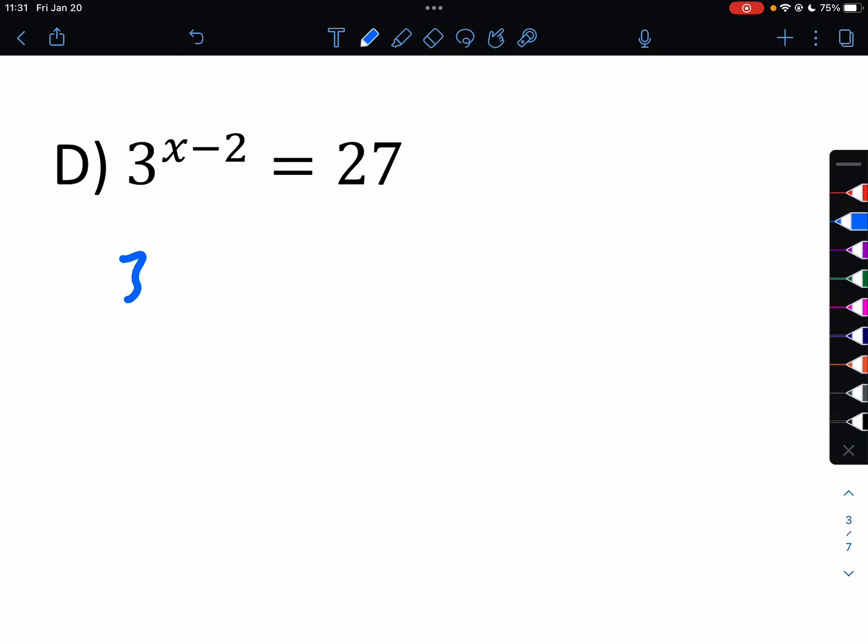D, we're going to do powers of 3. That's a pretty simple one. So x minus 2 equals 3. x would be 5.